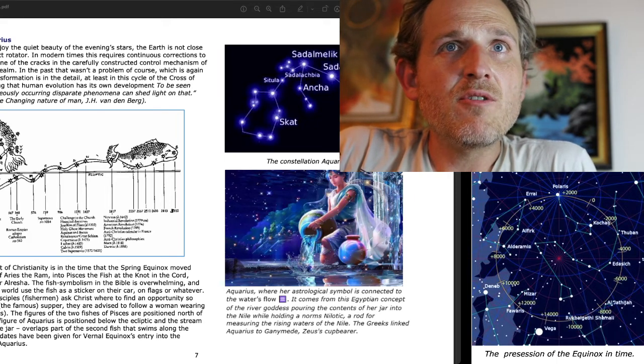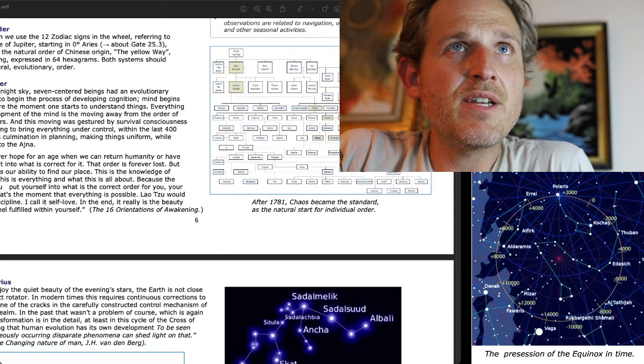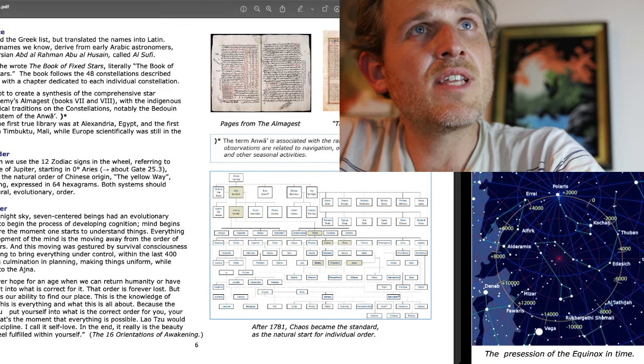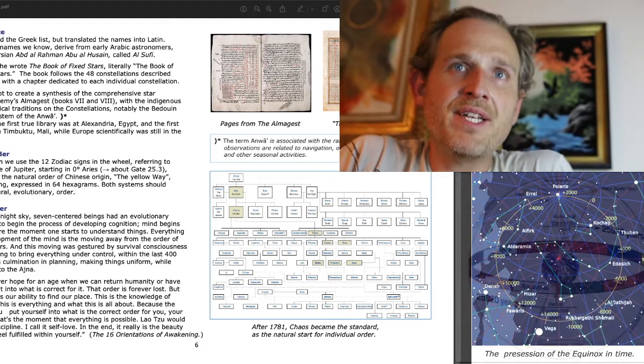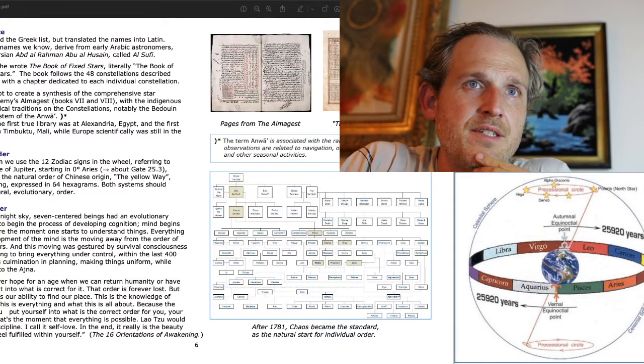All right, well, we covered some interesting ground today. We'll pick back up with Pisces to Aquarius. We've talked about the loss of order, the natural order that made more sense in the time of the seven-centered being because it was all about finding your place in the order. And that now we are nine-centered, and it's not about finding your place in the order. It's about finding the place in your own order, so to speak. So there's a little bit of a distinction here. It's what Ra said. We can't ever hope for an age when we can return humanity or have humanity truly fit into what is correct for it. That order is forever lost. But what is not lost is our ability to find our place.